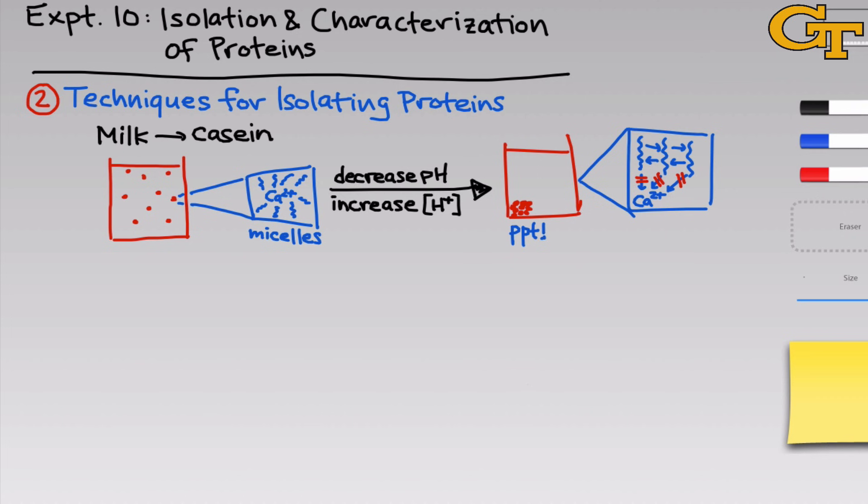At this point, the protein molecules are in a separate phase from the liquid and the Ca²⁺, so we can simply filter out the solid to leave us with the solid protein mass. The solid protein that comes from milk — this mass of casein proteins — is really the curds in curds and whey. Curds and whey is essentially milk that has been deliberately curdled; the curds are the solid portion and the whey is the Ca²⁺ and liquid components left behind. In the laboratory, we'll do a chemical test involving Cu²⁺ to confirm that the curds are indeed made of protein.